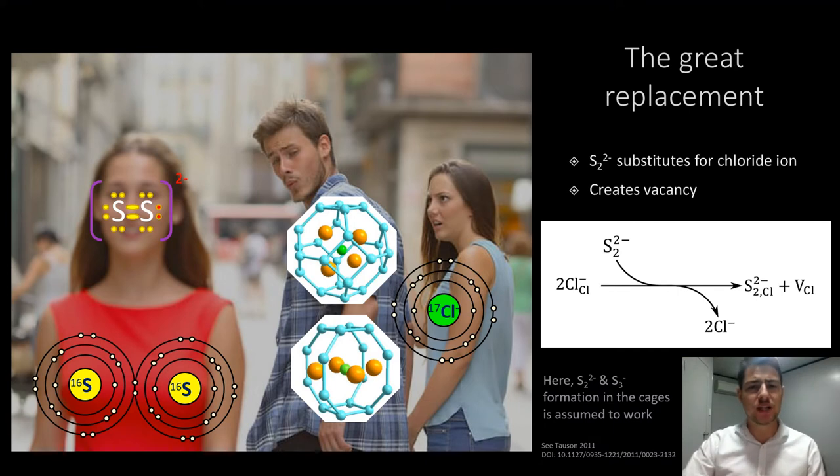Once upon a time chlorine ion was minding its business in the cage, but somehow in a melt, a hot disulfide S22- caused competition and became surprisingly well assimilated in the aluminum silicate framework. Chloride had to go away, and it wasn't easy to keep things balanced in the matrix. A hole was left in the feldspathoid's house, and that's how vacancies are created.